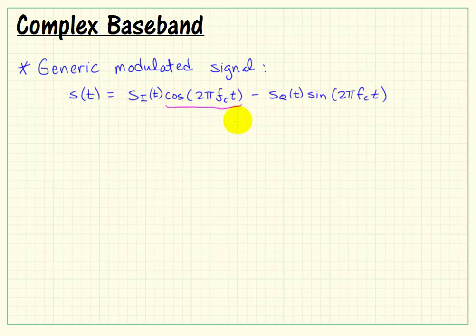The signal is S of T. Here we see the modulation showing up as a carrier wave, sinusoidal carrier wave. It's actually split into two different pieces, cosine and sine.